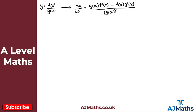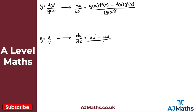In the previous video when we looked at the product rule we used the notation u and v. I'm going to do the same here for the quotient rule. If I have y equal to u over v, where u and v are my two functions, I can differentiate again and get dy by dx equal to v u prime minus u v prime, all divided by v squared. This is just a quicker way of expressing the quotient rule rather than using function notation, but they are equivalent and both give the correct derivative.